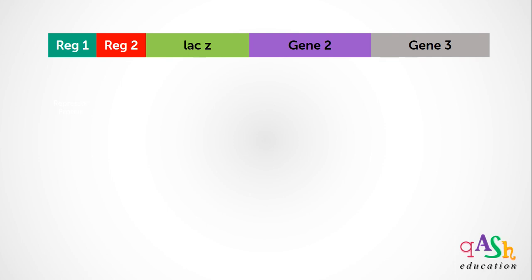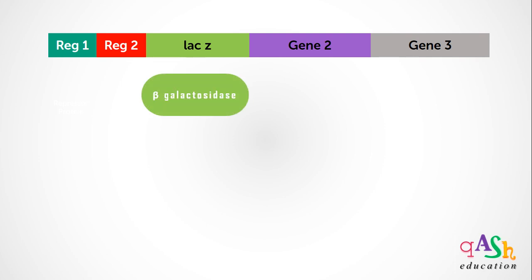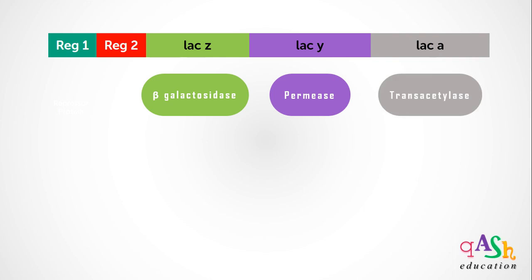The first gene, also called lac Z, codes for the enzyme beta-galactosidase. Gene 2, called lac Y, codes for the enzyme permease. Gene 3, lac A, codes for the enzyme transacetylase.